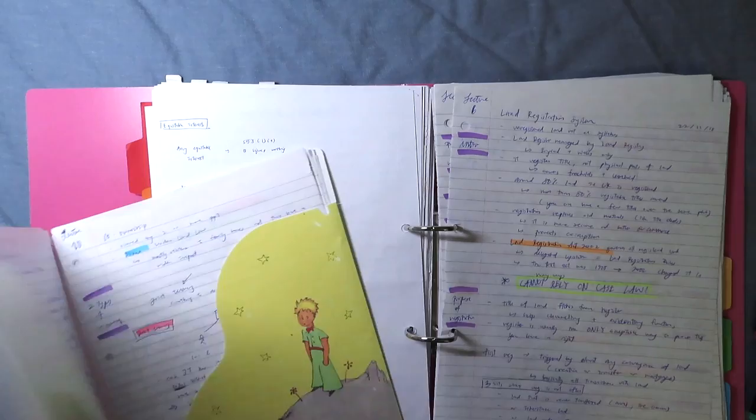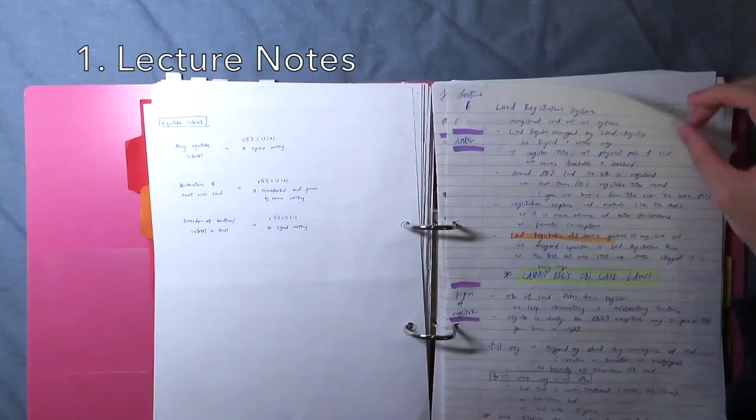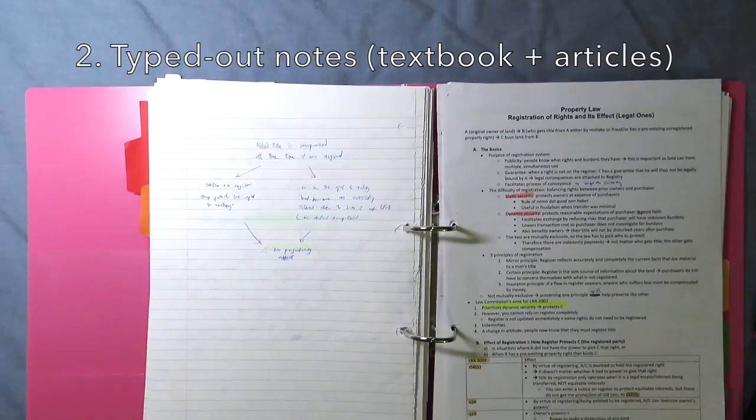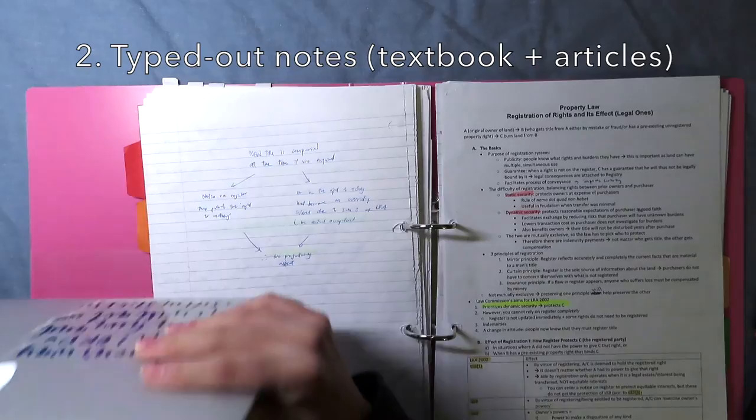So before we get into it, I'll just tell you guys what the four steps are. The first step is lecture notes, which I usually take by hand, but obviously you can also type these out depending on your preference. The second step is my main body of notes, and I'll usually type these out. This usually includes my lecture notes plus textbook notes, plus any notes I take from articles or extra reading material, and I'll compile all of these into one single document.